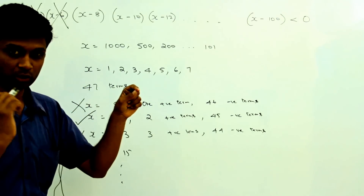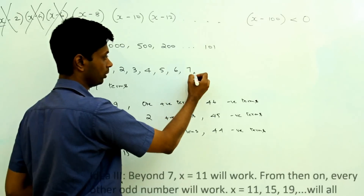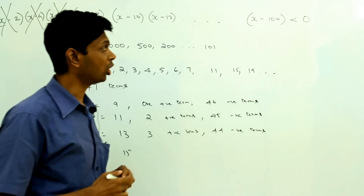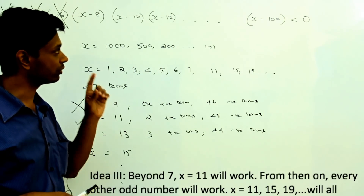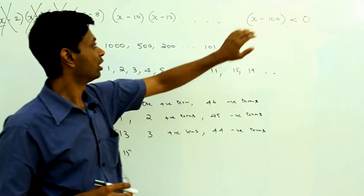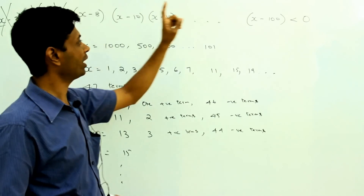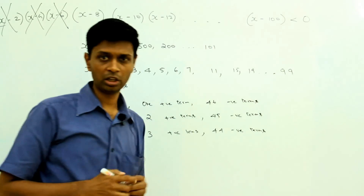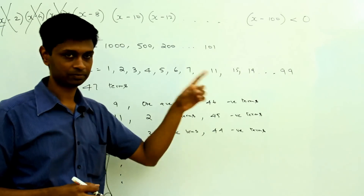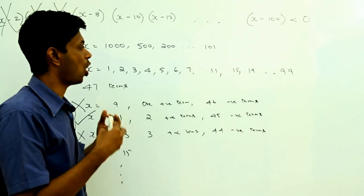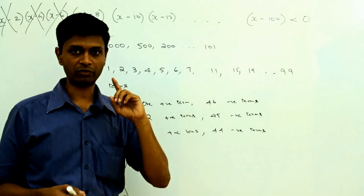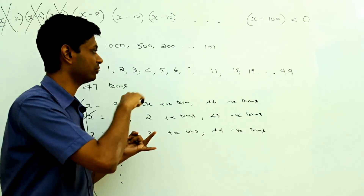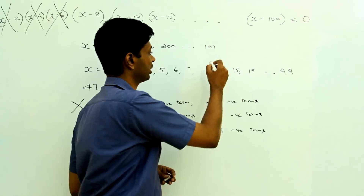Coming back to our full list: 1, 2, 3, 4, 5, 6, 7 will all be counted. After this we have 11, 15, 19, all the way to some upper limit. The last odd number to consider is 99. When x is 99, the term x minus 100 is negative and everything else is positive — one negative term, so the product is negative. So 99 gets counted. The valid list is 1 through 7, then 11, 15, 19, all the way to 99.